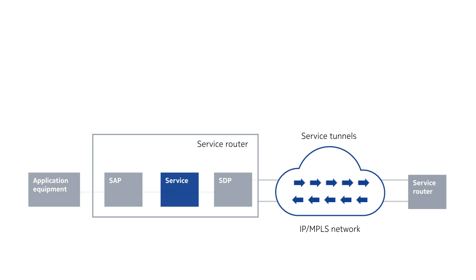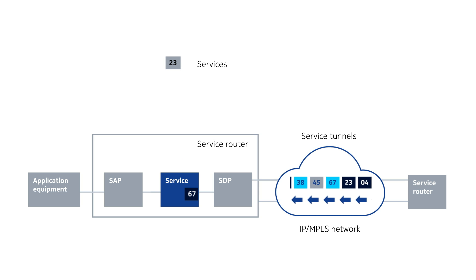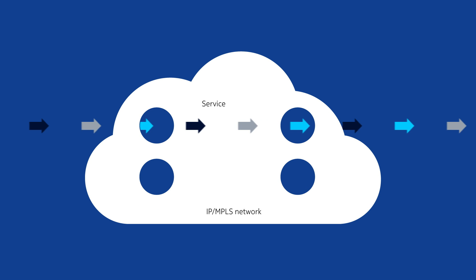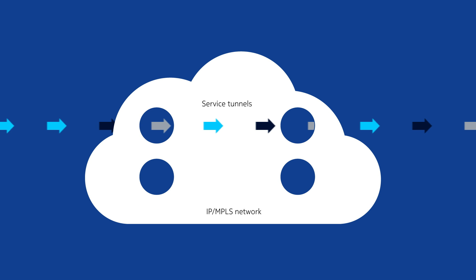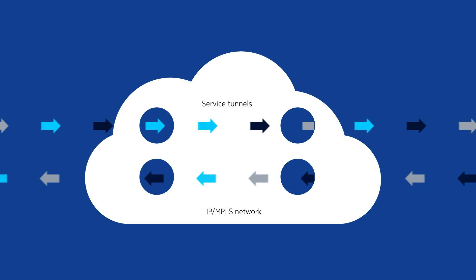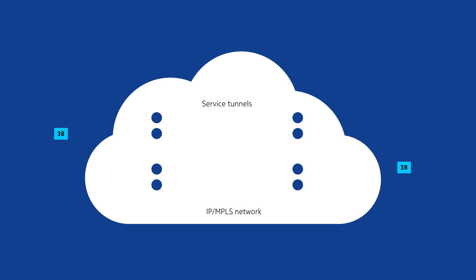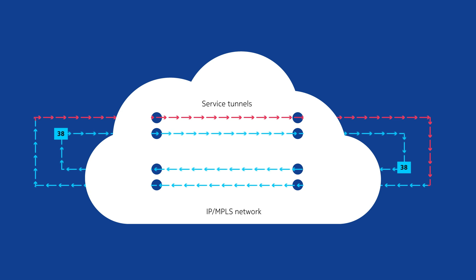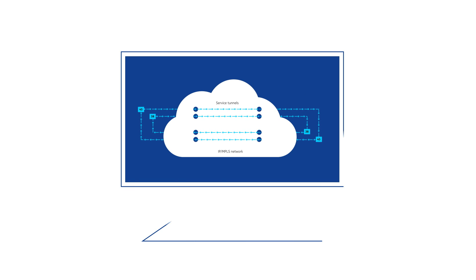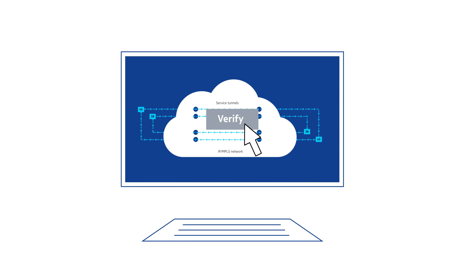Unlike the generic routing model, Nokia's service centric approach offers operators the following key benefits: many services of different types can be bound to a single tunnel; the configurations of tunnels are independent of the services they carry, and any changes can be made to a single logical service entity rather than multiple ports; a failure in the network core affecting a service tunnel can be pinpointed to specific services; and operational integrity can be verified by a single OAM operation rather than through dozens of steps.